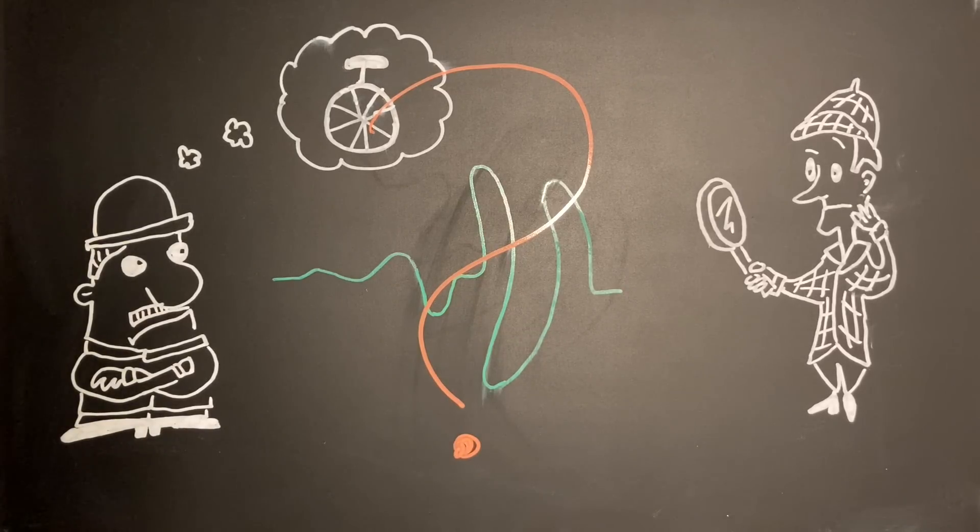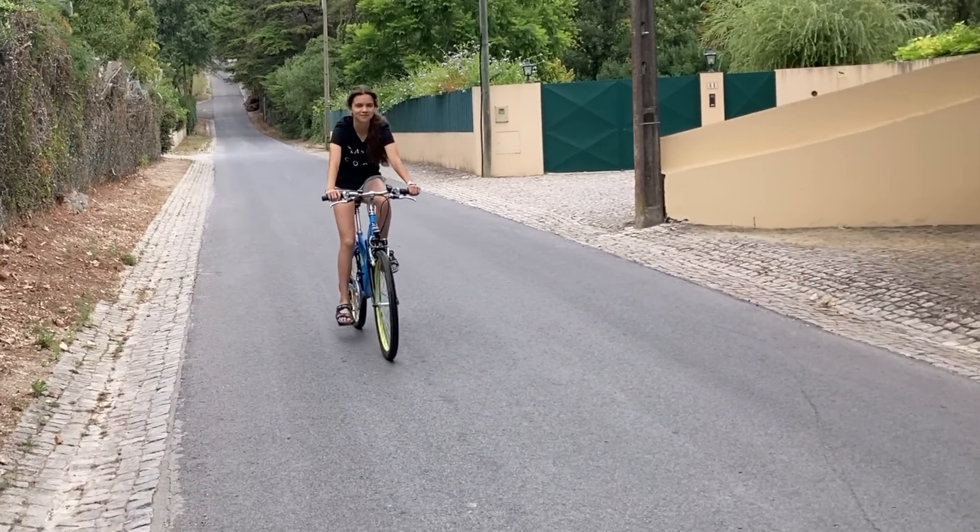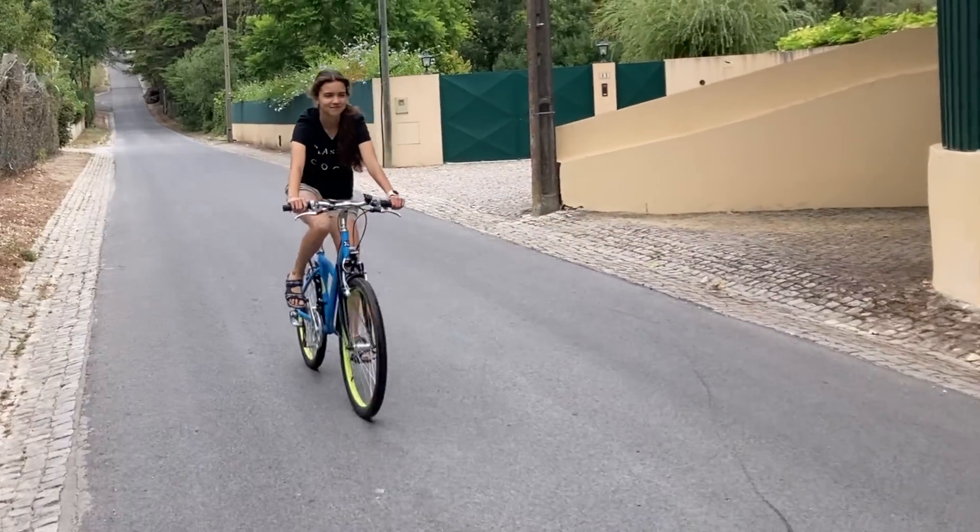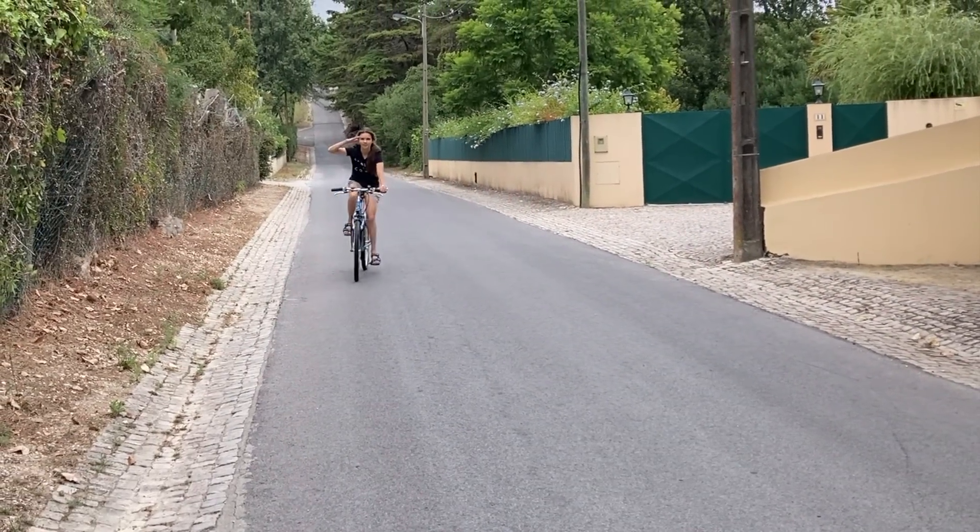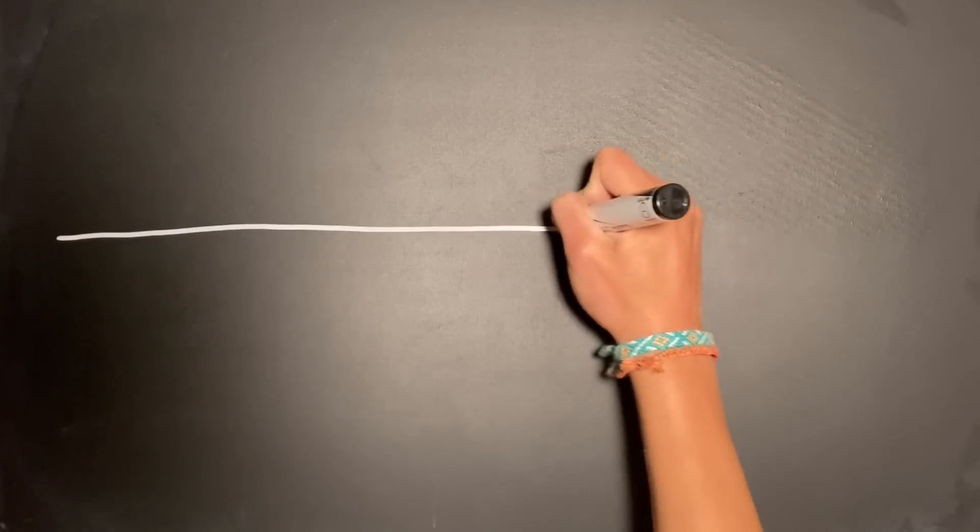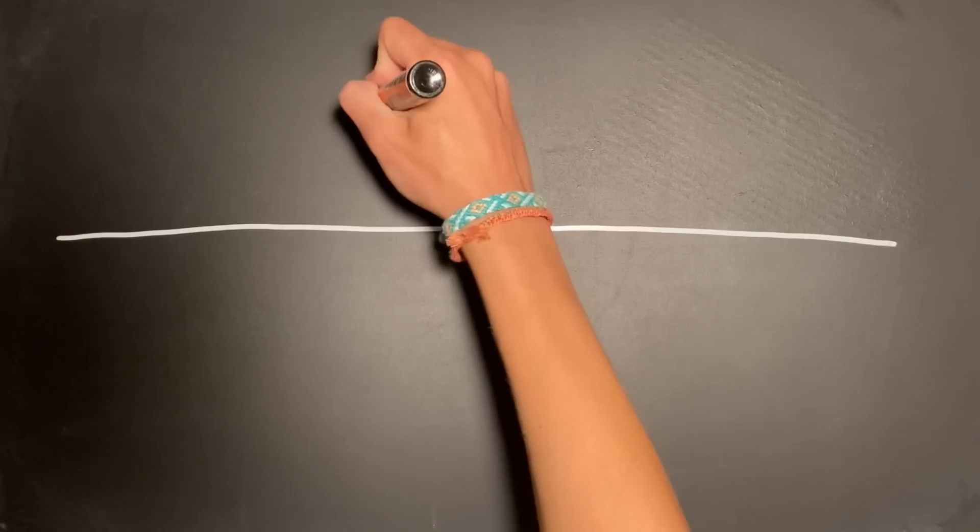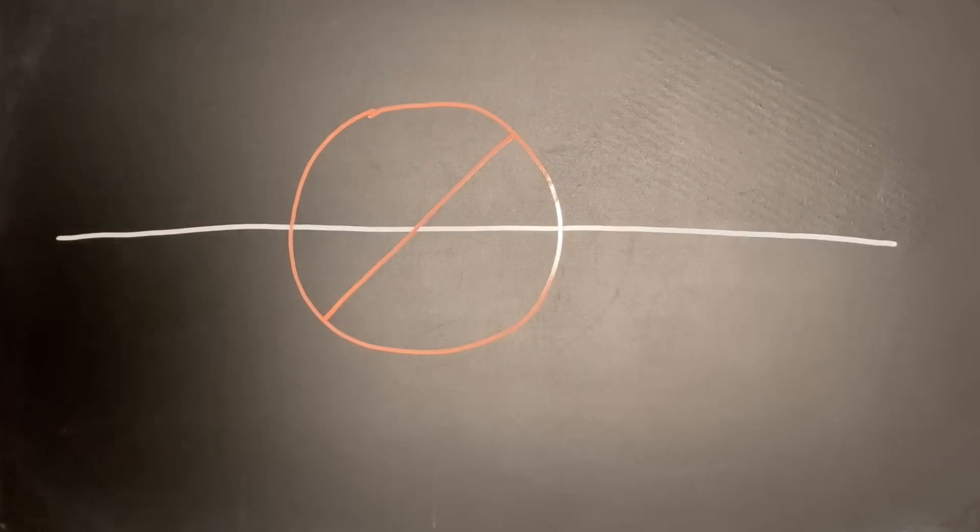Both wheels of the bike must have been on the ground the entire time. That is, Holmes and Watson know for sure that the cyclist wasn't doing a wheelie. Additionally, the track in question is not a straight line, and the bike must have been moving the entire time.